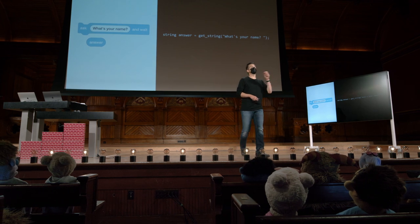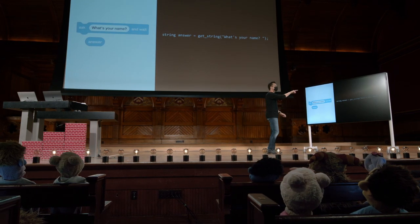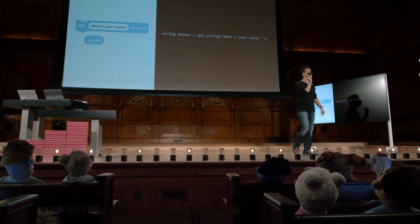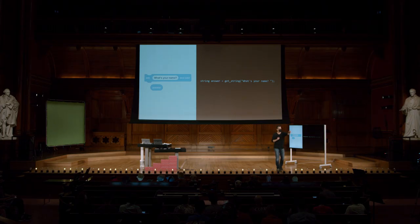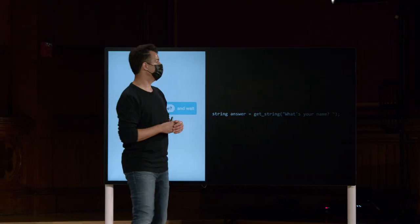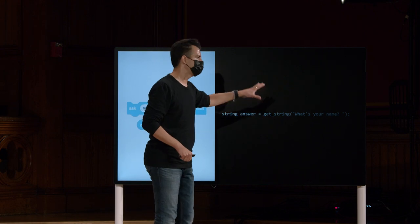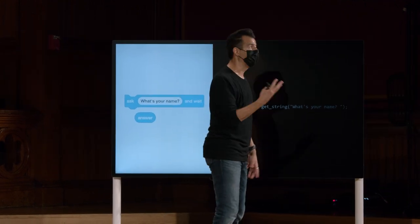Boa pergunta. Suponha que eu misture maçãs e laranjas e tente colocar uma string onde deveria ser um int, ou vice-versa — o computador vai reclamar. Quando eu executar o comando make, não vai ficar contente e me dar outro prompt. Vai gritar com uma mensagem de erro enigmática até que tenhamos uma memória muscular paralela. Ah, o que aconteceu com a barra invertida N? Voltaremos a isso em breve, porque eu deliberadamente omiti isso aqui, e veremos o comportamento diferente em um segundo.